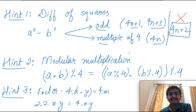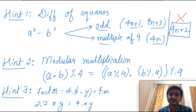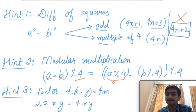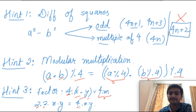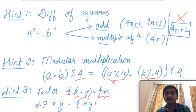The second hint is modular multiplication: (a·b) mod 4 is the same as (a mod 4 · b mod 4) mod 4. The third hint is that if you have 4 as a factor and multiply any number of terms, the result will again have 4 as a factor. Also, 2×2 gives 4, so again you get 4 as a factor regardless of further multiplications.